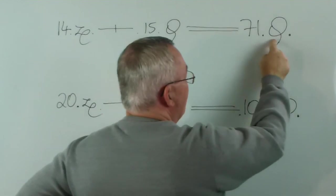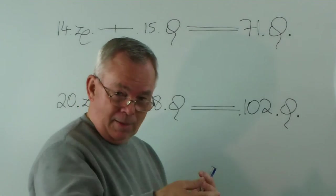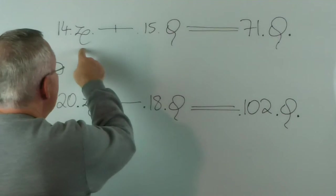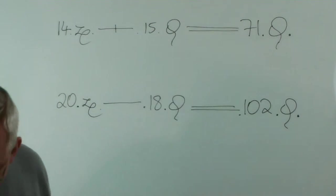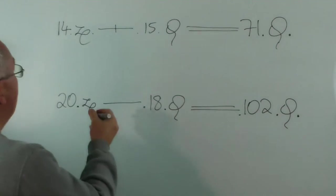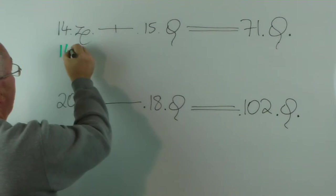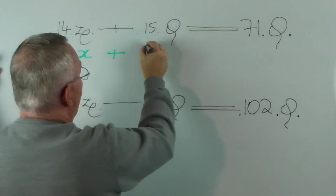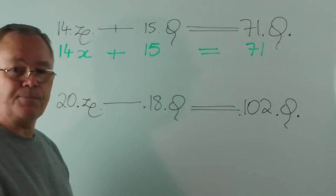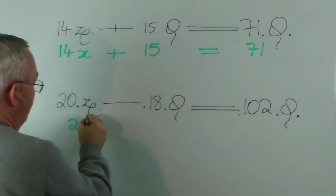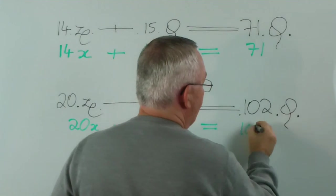Whenever Robert Recorde used this symbol, all it means is that the number in front of it is a number. It's not 71 lots of some other value, it's just 71 as a number. This symbol simply means we have 14 things we don't know about. So, as surprising as it is, in today's language this would be a Year 8 question, a question for about a 13 or 14-year-old student. This would read 14x plus 15, which is just a number, equals 71, which is just a number. This would be 20 times an unknown, minus 18, which is a number, is 102, which is just a number.